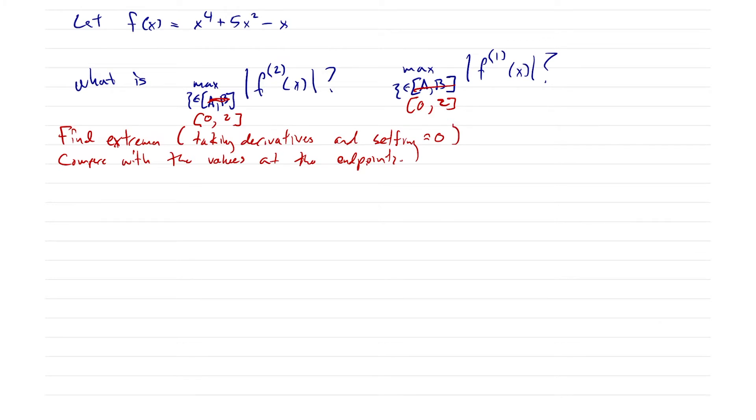Okay. So let's go ahead and try to compute that. So I'm going to start with this guy here. So we're going to start with this one, max of C in zero to two of F prime of C. And now we want to find that. Well, first we need to find F prime, right? And then so F prime of X is going to give us four X cubed plus 10 X minus one. So we're looking for the maximum here.